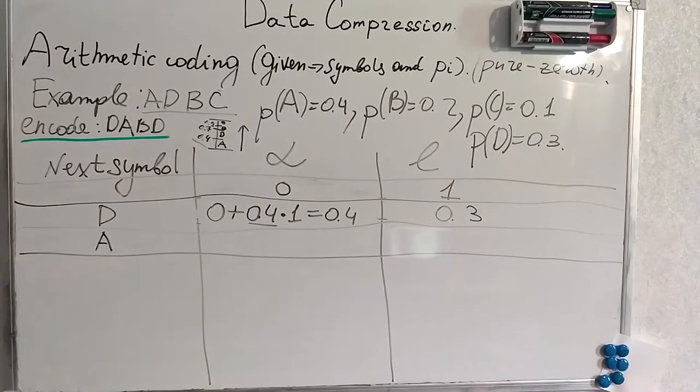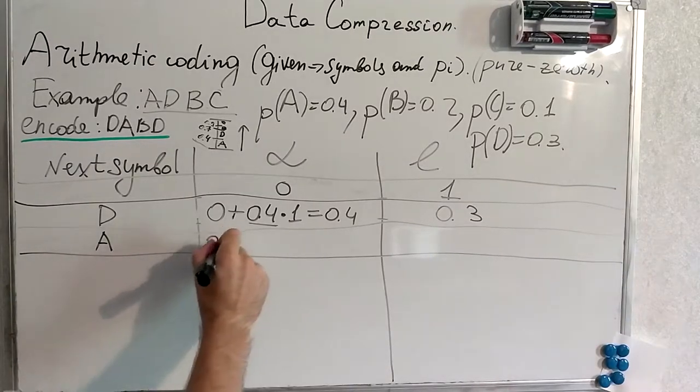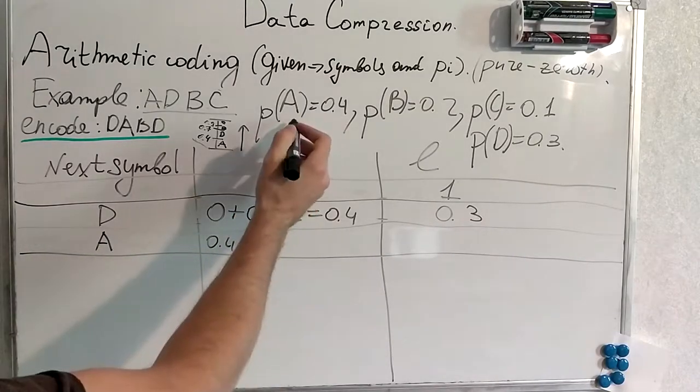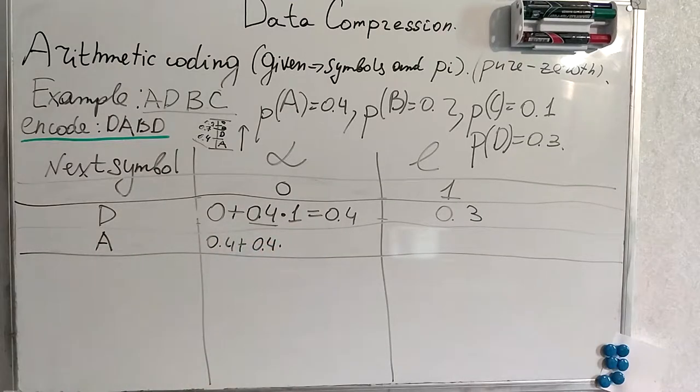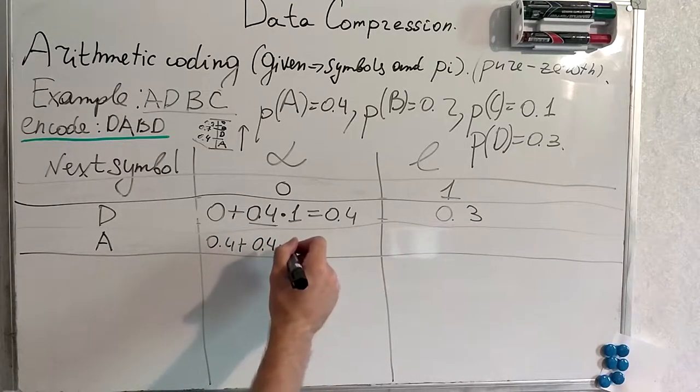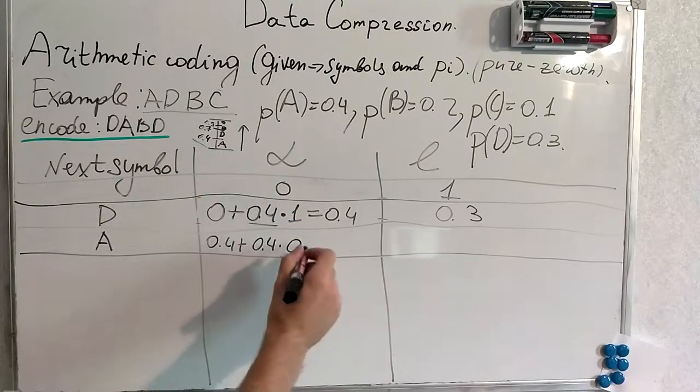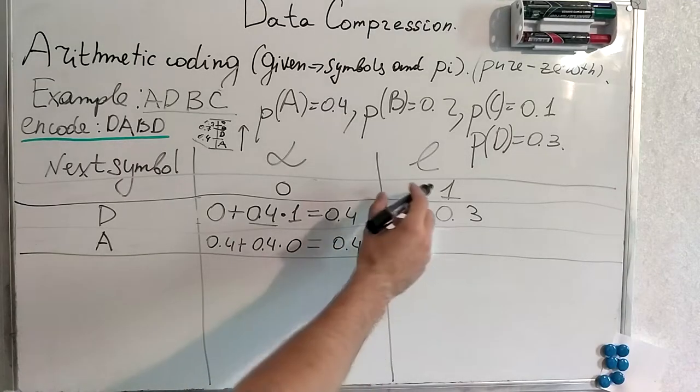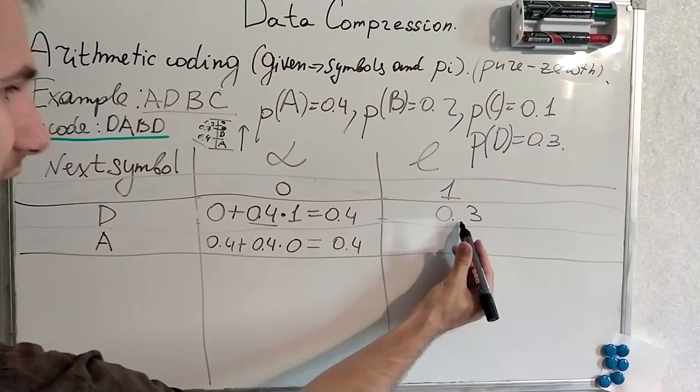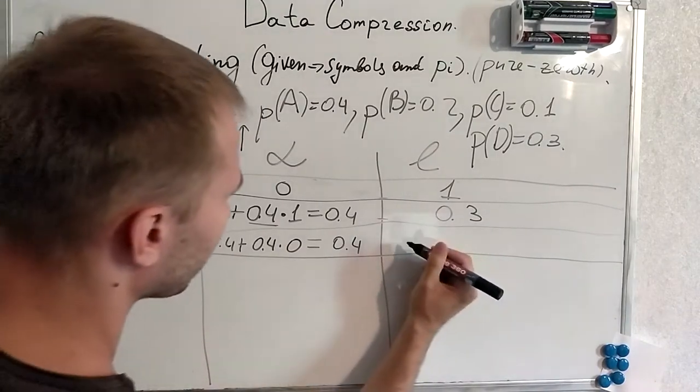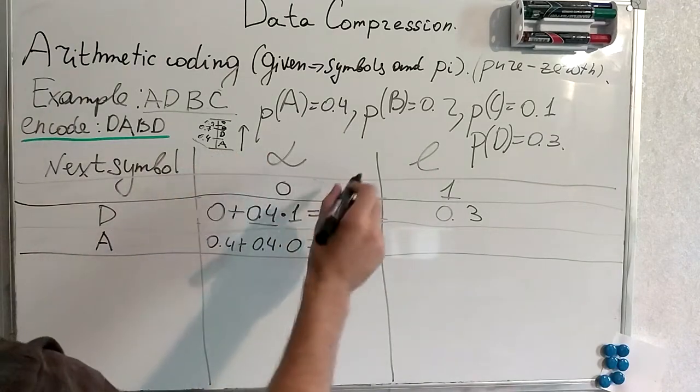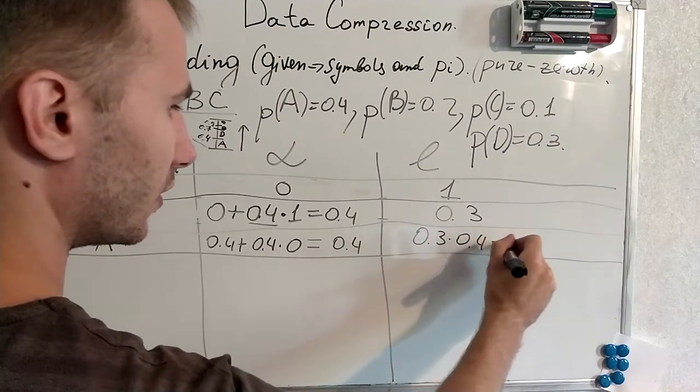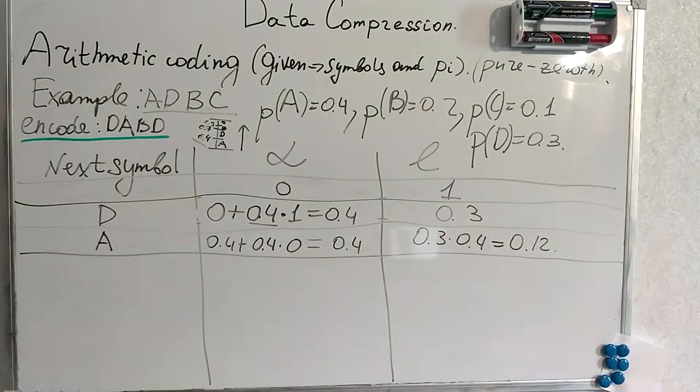Next symbol is A. What's the new alpha for A? It's 0.4 from previous interval. Plus L length of the interval for A. It's 0.4 multiplied by something. This something will actually be 0 because no symbols occur before A. Thus alpha is still 0.4. And length of this alpha is the previous length multiplied by new length. Length for A is 0.4 because its probability is 0.4. So 0.3 multiplied by 0.4 equals 0.12.